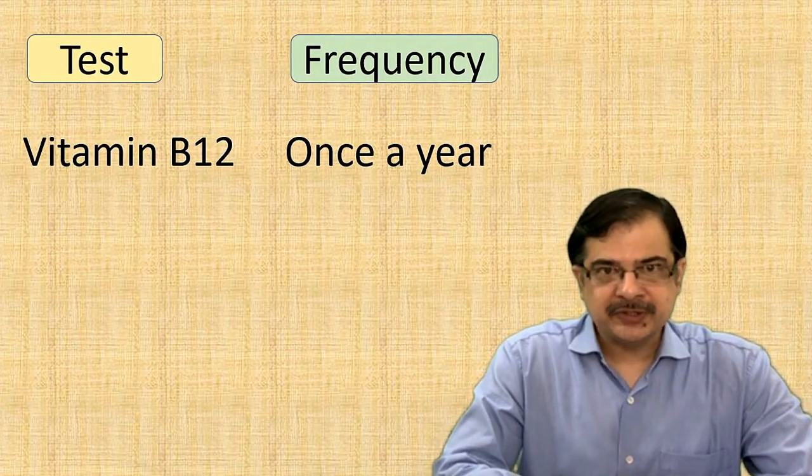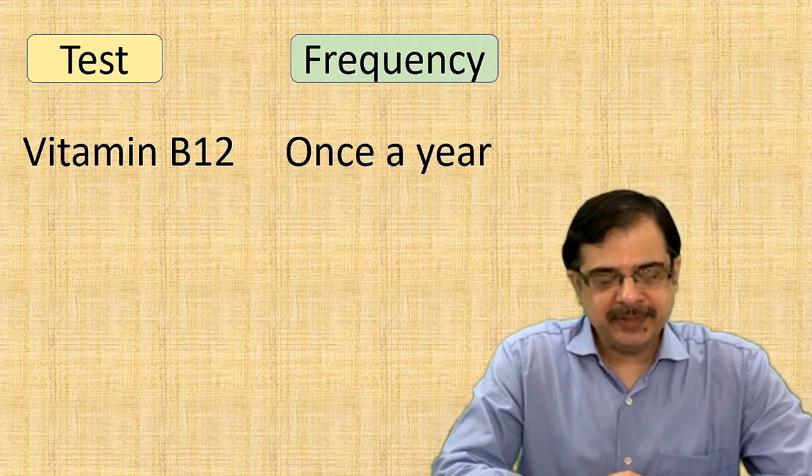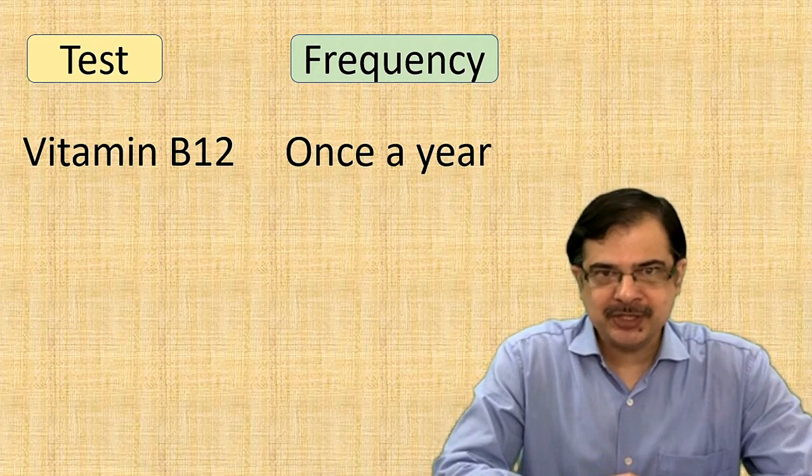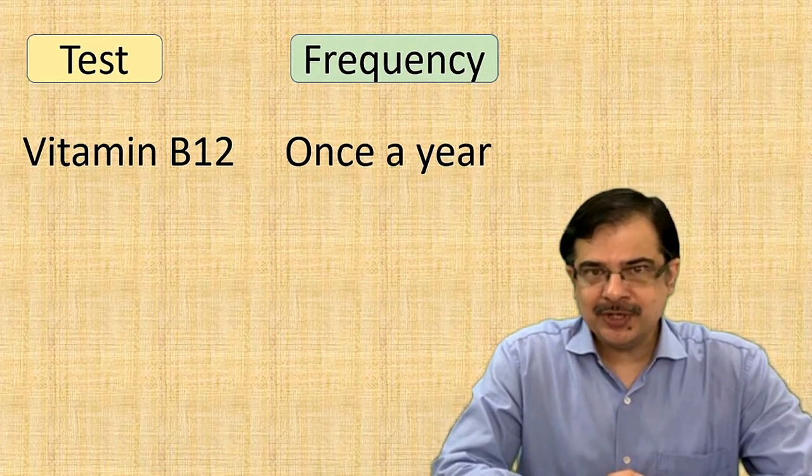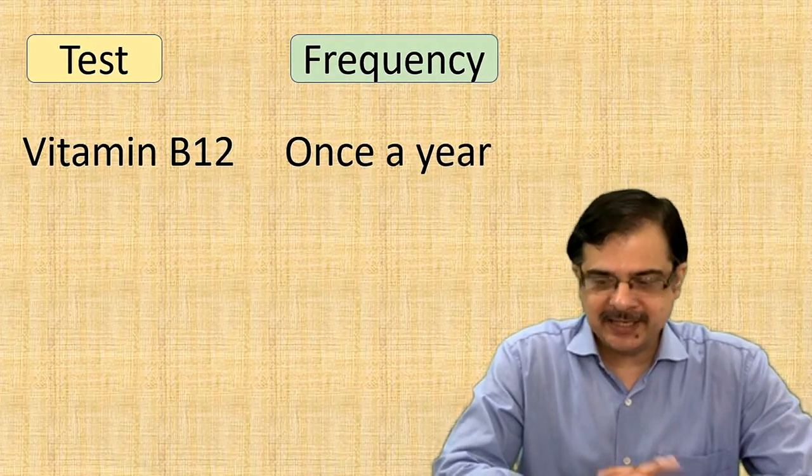Vitamin B12 levels: a common drug, metformin, can cause B12 deficiency, and B12 deficiency can cause or aggravate neuropathy in a diabetic patient. So if a patient is on long-term metformin therapy, then B12 level should be assessed once a year.